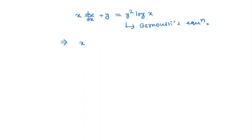So we have x y^(-2) dy/dx plus y^(-1) is equal to log x. Now we make a change of variable. We take y^(-1) = u, so that implies minus y^(-2) dy/dx is equal to du/dx.